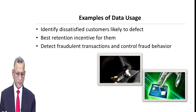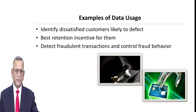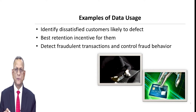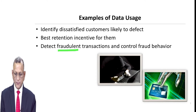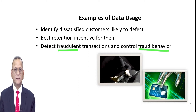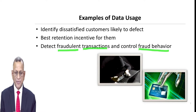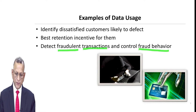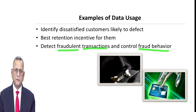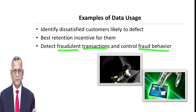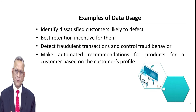The third example is detecting fraudulent transactions and controlling fraud behavior. Something fishy is going on — fraudulent transactions are happening — and you want to know where it is happening and what kind of transactions are being done fraudulently so that you may control them. This will also be possible with the help of data.